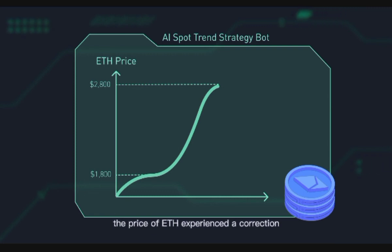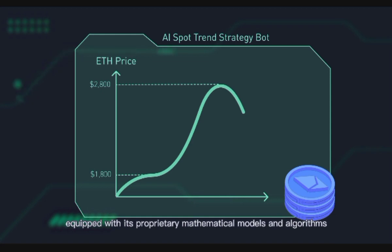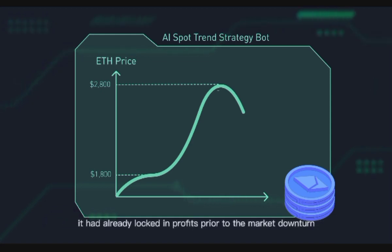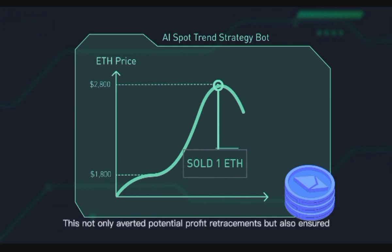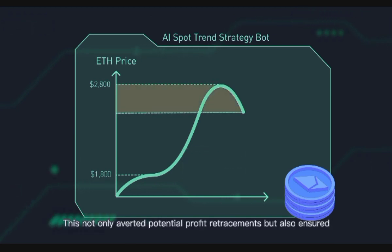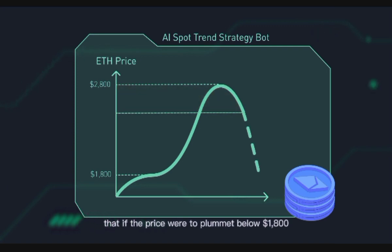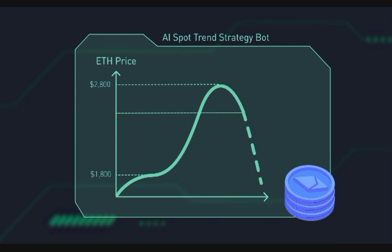Over the following week, the price of ETH experienced a correction. However, thanks to KuCoin's strategy bot equipped with its proprietary mathematical models and algorithms, it had already locked in profits prior to the market downturn. This not only averted potential profit retracements but also ensured that if the price were to plummet below one thousand eight hundred dollars, Investor A's principal remains safeguarded.